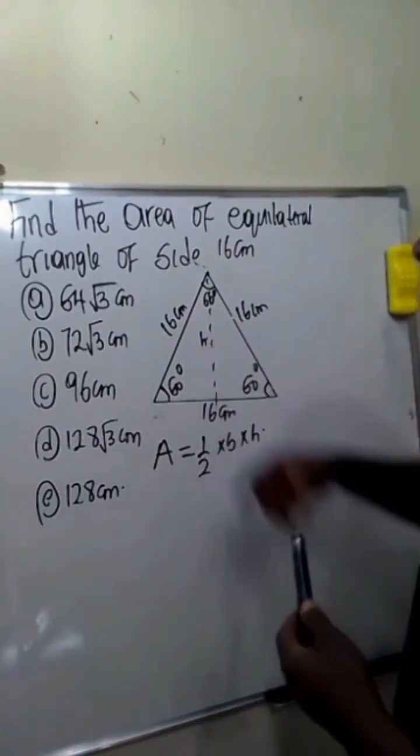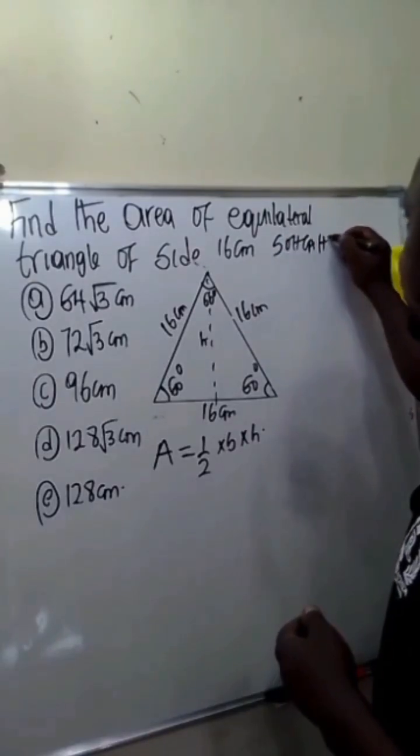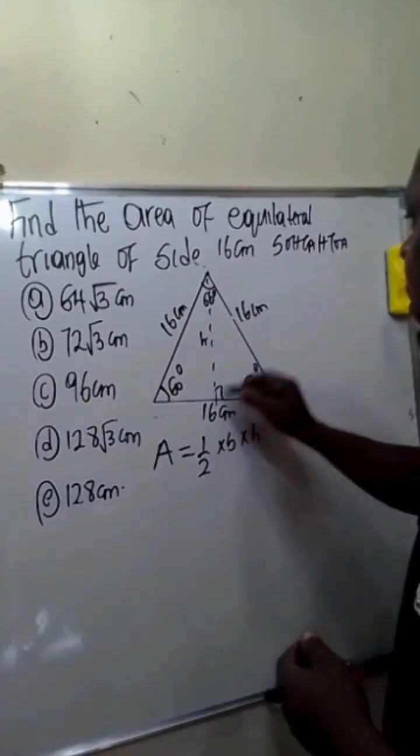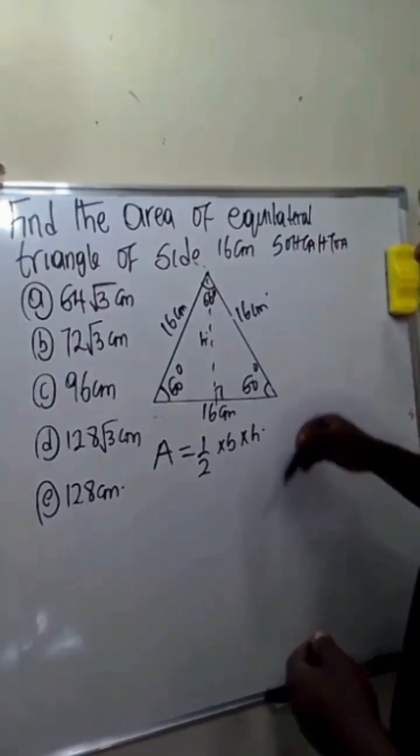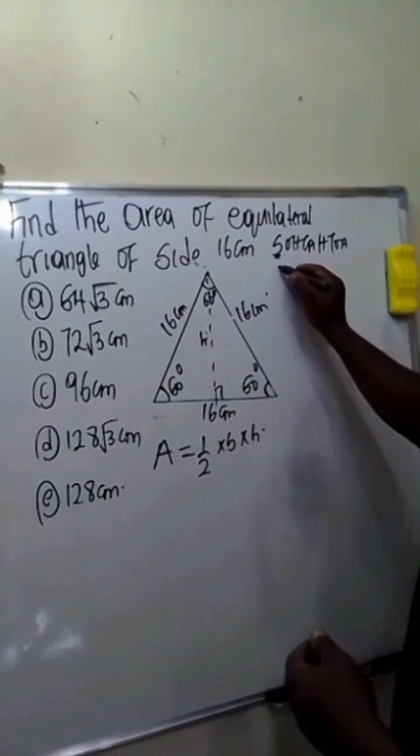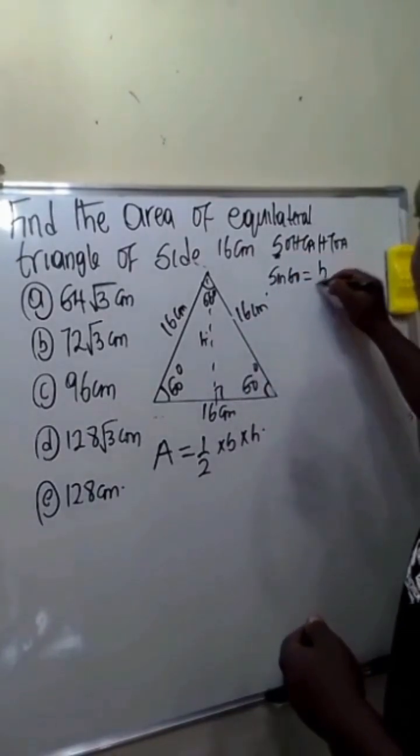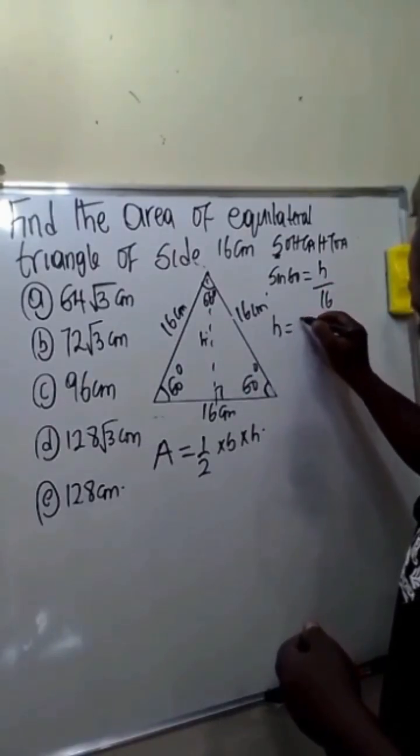To find this height we are going to use the trig ratio SOHCAHTOA. This is 90 degrees, this is opposite, this is hypotenuse. Considering this angle, we are going to be using sine. Sin 60 will be equal to opposite which is h, and our hypotenuse is 16. h will be equal to 16 sine 60.